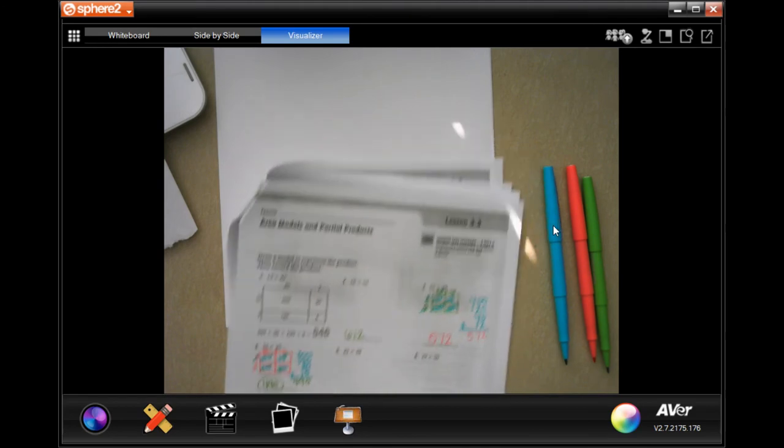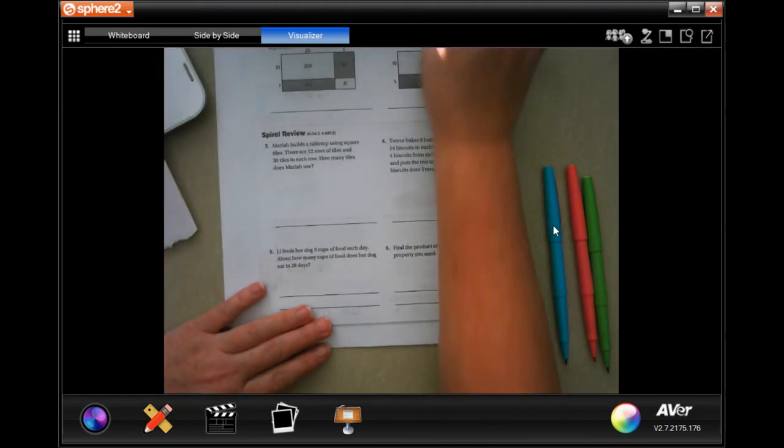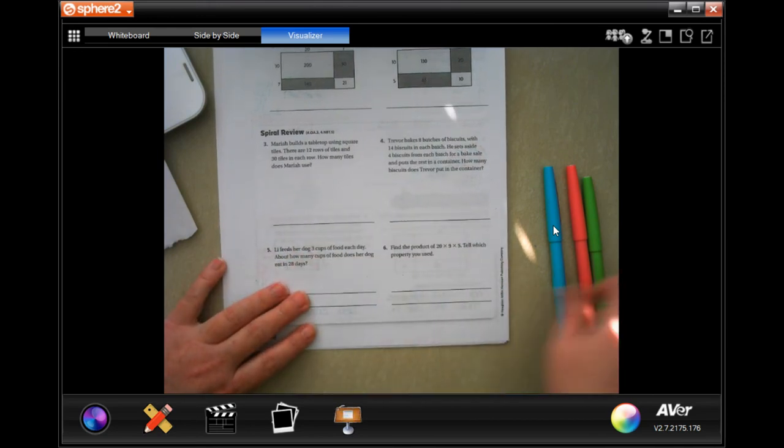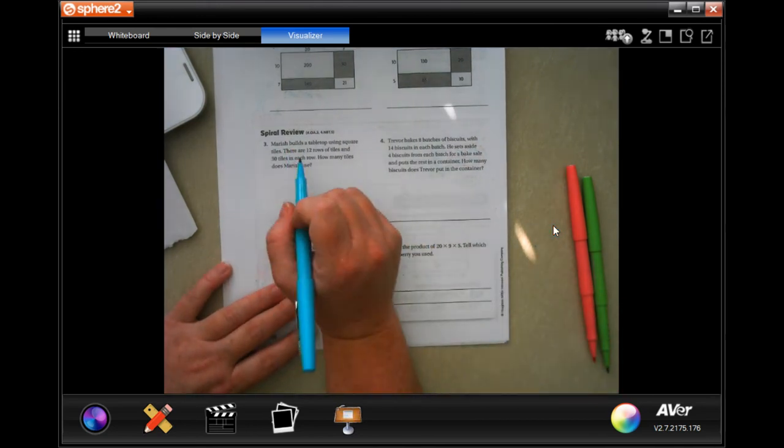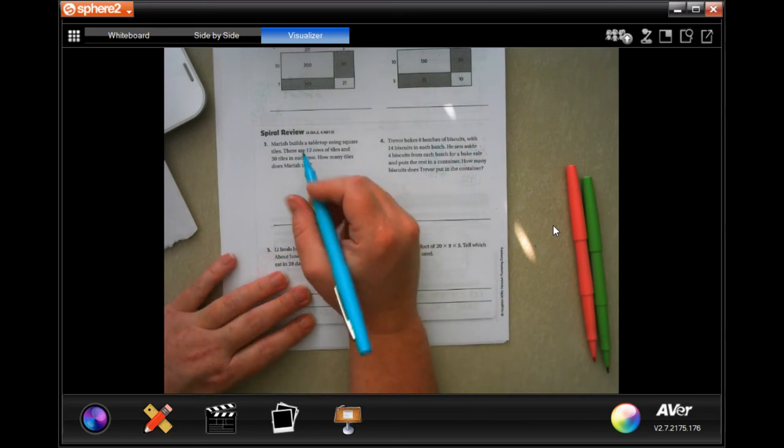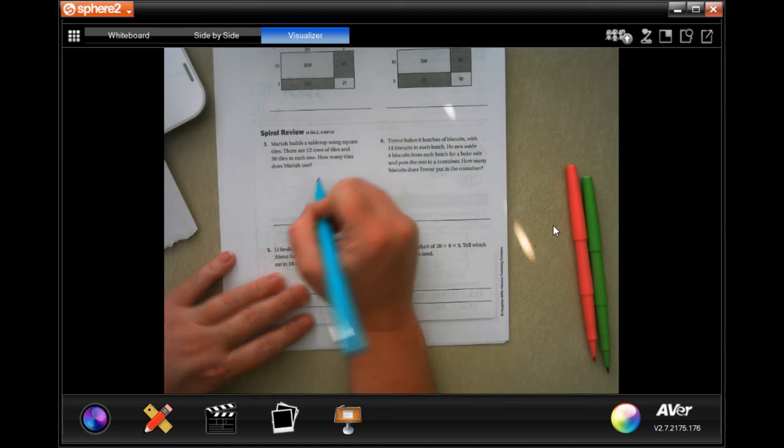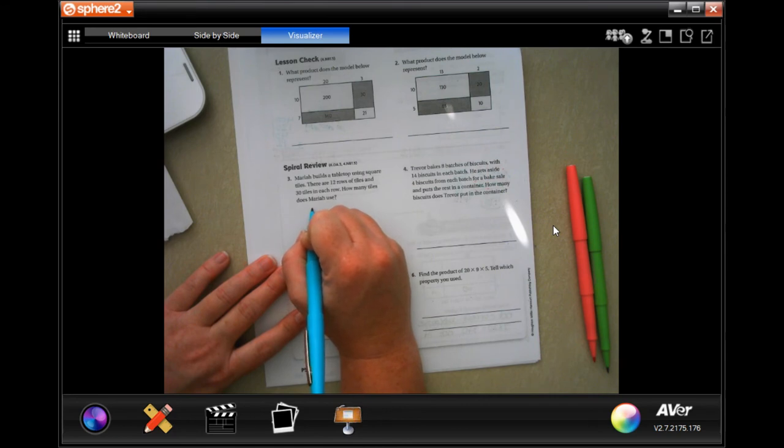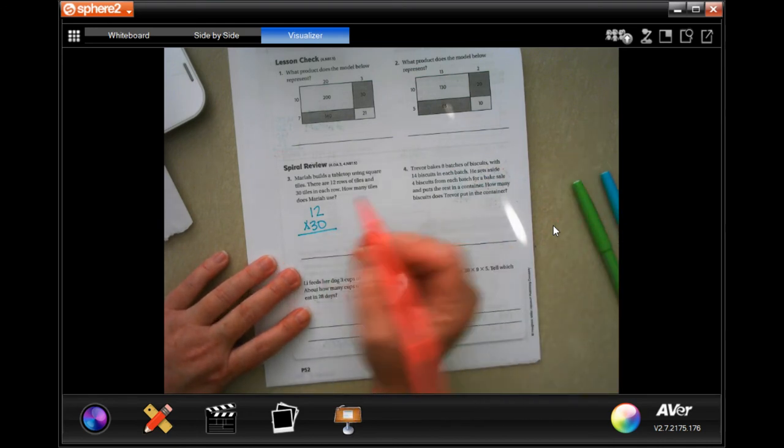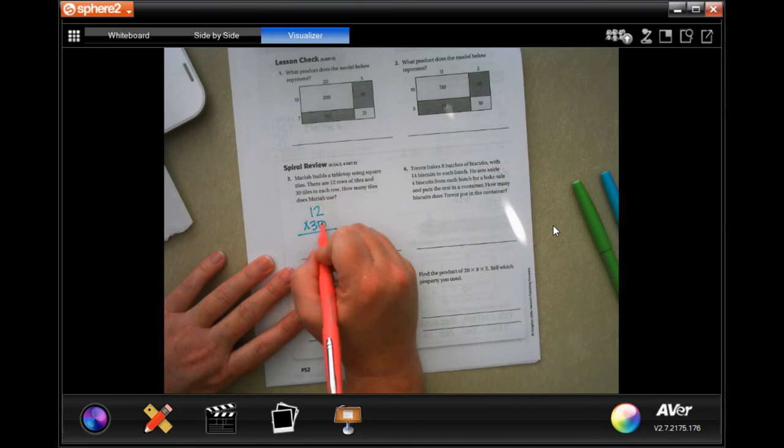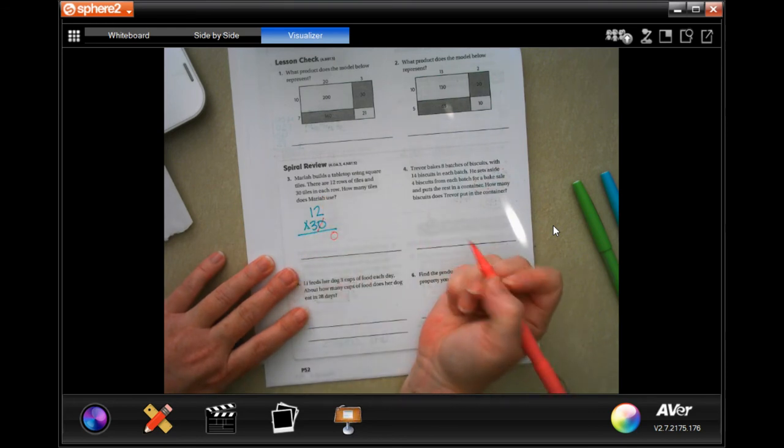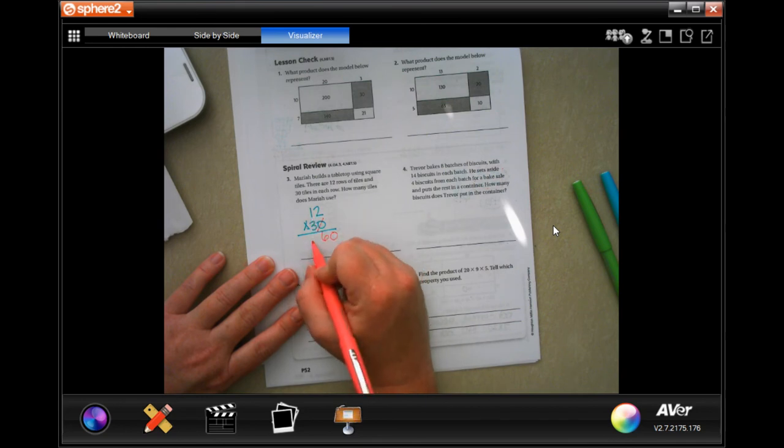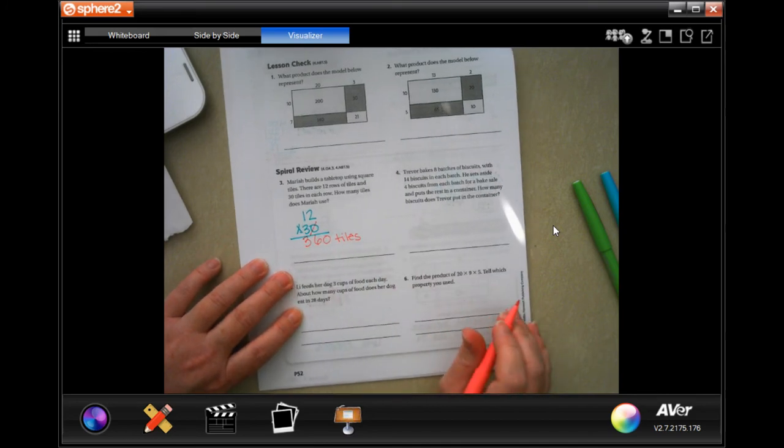So we're going to go over to the back. You guys are going to do the lesson check. You totally can. We are going to go down to the spiral review. Does Mariah build, number 3, does Mariah build a tabletop using square tiles? There are 12 rows of tiles and 30 tiles in each row. How many tiles does Mariah use? Well, we're just going to, actually, we're just going to do old-fashioned multiplication. See that zero right there? I love multiplying with numbers that end in zero, because I'm just going to take it out and put it at the end.